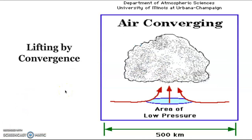Lifting by convergence: this lift occurs when airflow comes in from multiple directions and causes air to move upward. It occurs when air near the surface flows together and is pushed upward when it is squeezed together. It is the bulk lifting of an entire layer of air. Convergence can lift a layer of air hundreds of kilometers across.